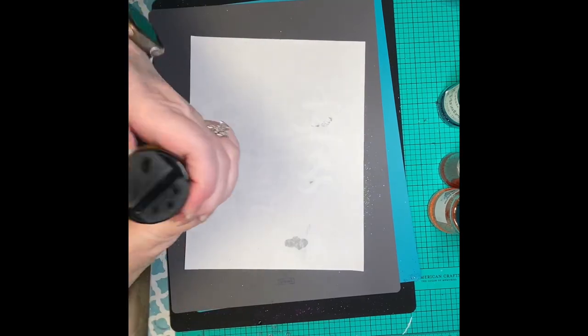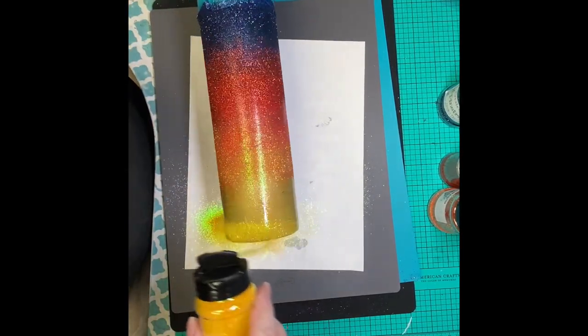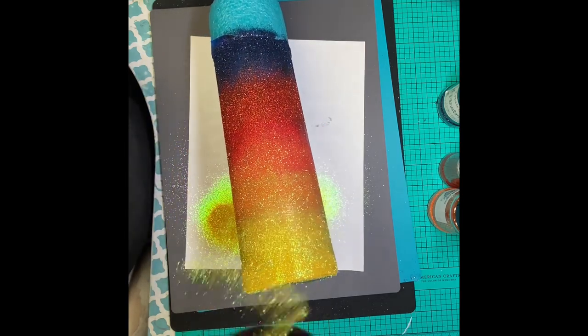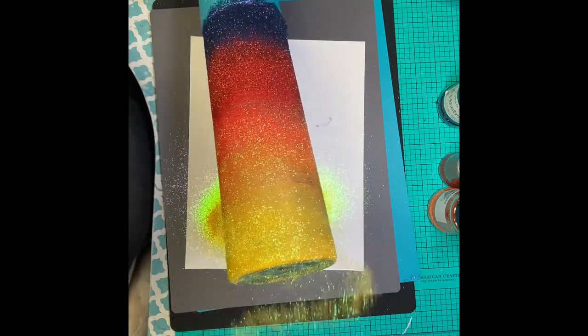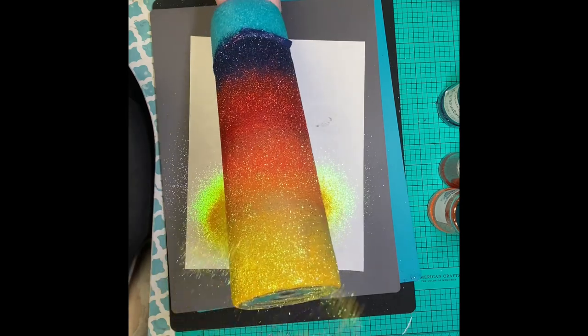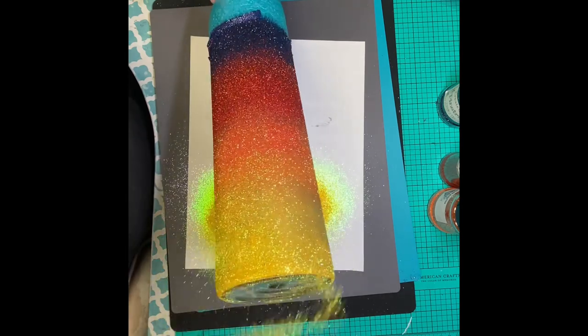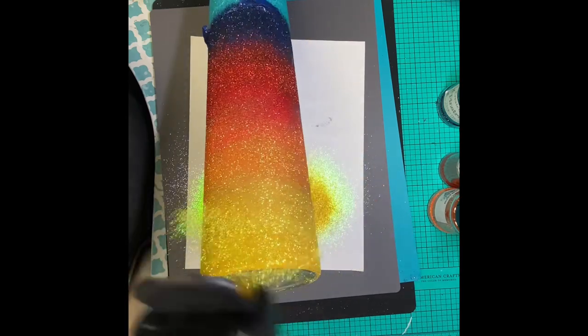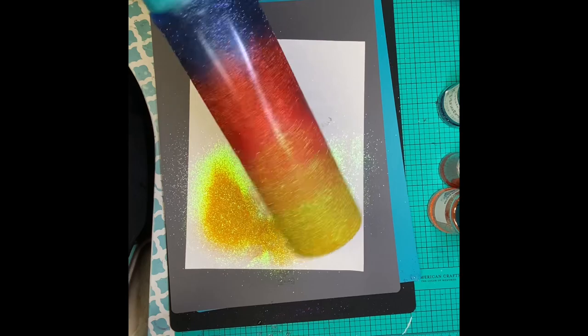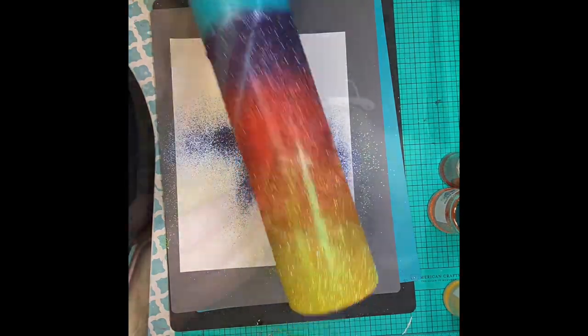For the yellow, we're using Lemon from West Texas Glitter. We're going to go pretty heavy right there on that rim, and then like with the rest, we're just going to tilt it up and sprinkle until we're happy with what it looks like. And here's a little twirl action of all those colors together.